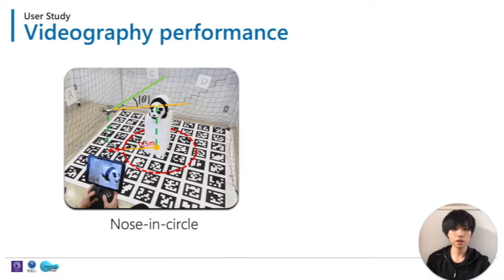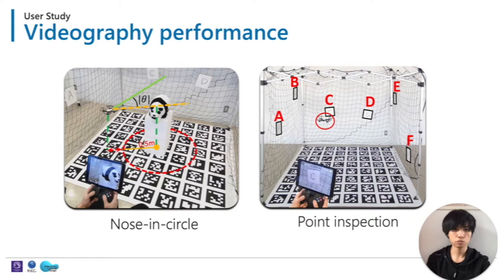For the point inspection task, participants are required to fly the drone sequentially along randomly given points — for example, B, C, E, A, F, then D — and task completion time is recorded.